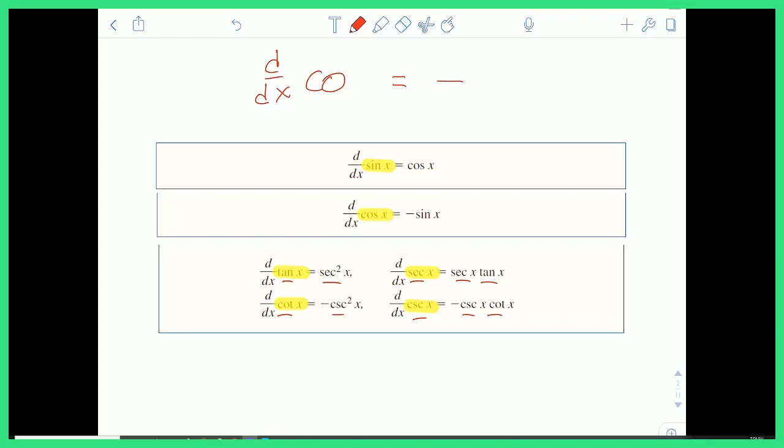When you take the derivative of cosecant or cotan, you get negative cosecant squared, and the derivative of cosecant x is negative cosecant x cotan x. So the co ones hang out together, and the tan and the secant hang out together. And then of course the derivative of sine is cosine and cosine is negative sine. So those ones kind of start to repeat themselves.